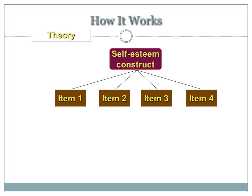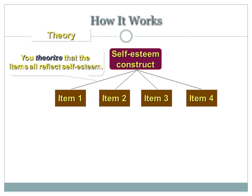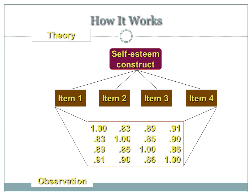For example, if we take a construct like self-esteem and assume that it has four items — four statements or questions that together measure self-esteem — the convergent principle would suggest that all four items would correlate very strongly with each other.